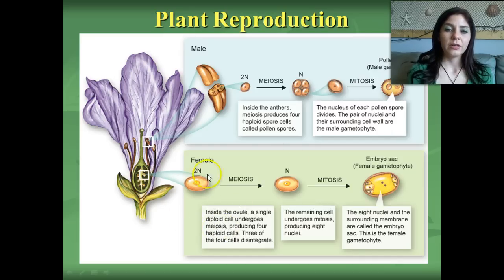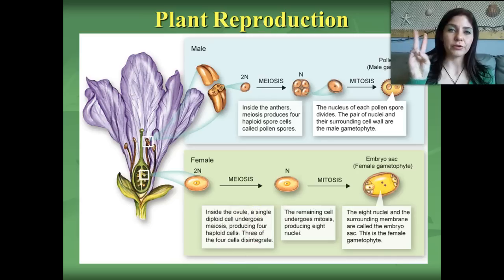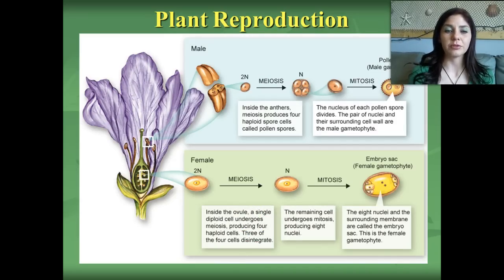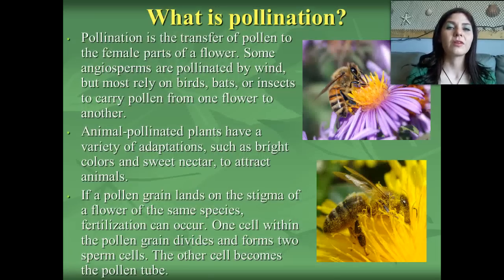In the female, meiosis also occurs inside the ovule. A single diploid cell undergoes meiosis to produce four haploid cells; three of these, called polar bodies, disintegrate and are reabsorbed back into the plant. The remaining cell undergoes mitosis to produce eight nuclei. Those eight nuclei and their surrounding membrane are called the embryo sac, which is the female gametophyte.